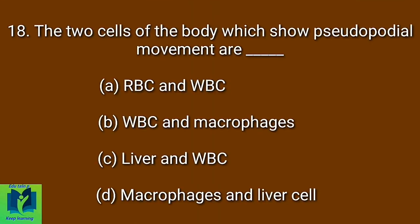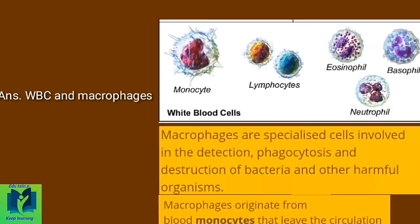The two cells of the body which show pseudopodial movement are dash. Option A: RBC and WBC. Option B: WBC and macrophages. Option C: Liver cell and WBC. Option D: Macrophages and liver cell. Answer: WBC and macrophages show pseudopodial movement. Macrophages are specialized cells involved in the detection, phagocytosis and destruction of bacteria and other harmful organisms. Macrophages originate from blood monocytes that leave the circulation.